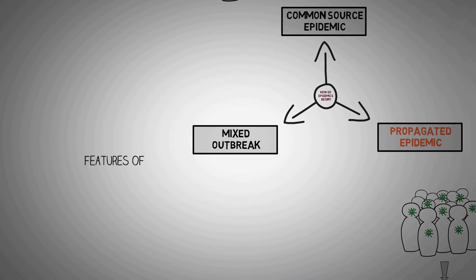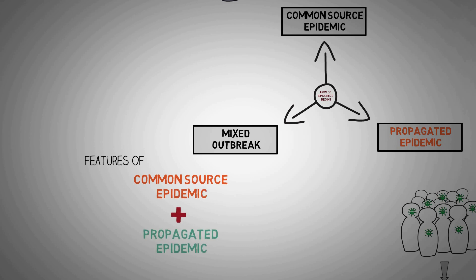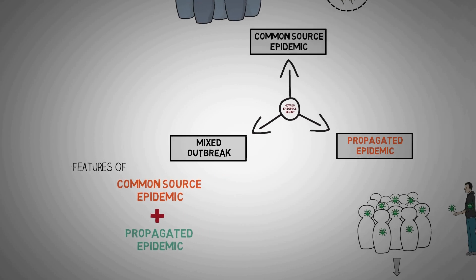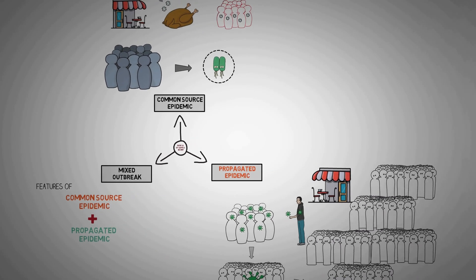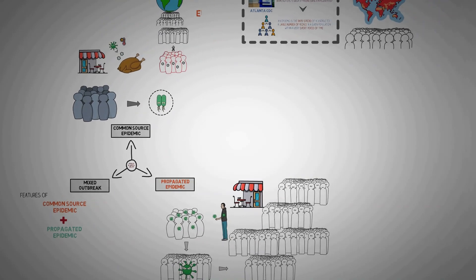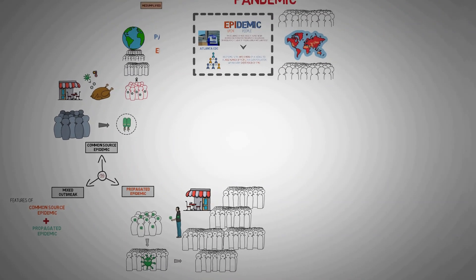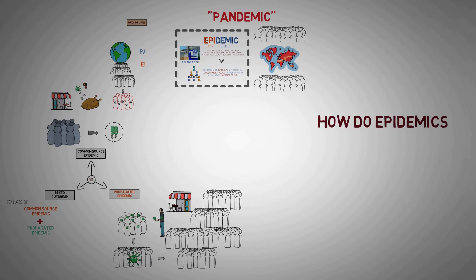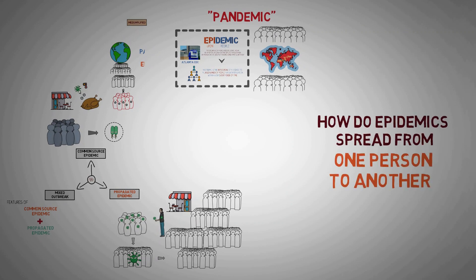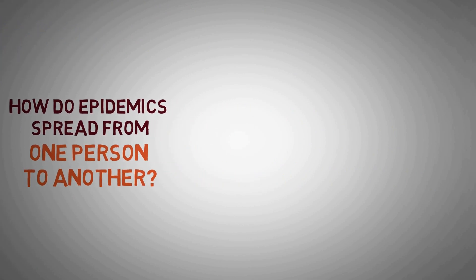Mixed outbreak epidemics have characteristics of both common source and propagated outbreaks. So this was about how epidemics start and how they propagate. That is what makes an epidemic so dangerous — its ability to affect more and more people as time progresses. And that brings us to our next important question: how do epidemics spread from one person to another?